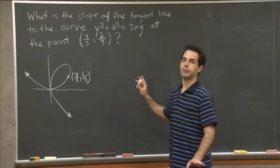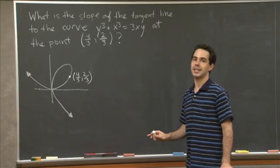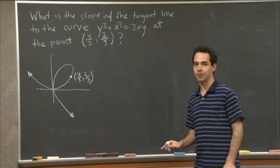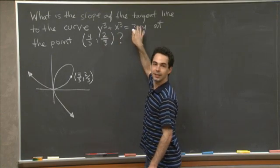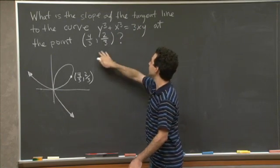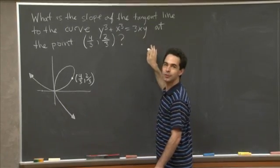So before we start doing anything, let me just make a couple of observations. If you don't believe me that the point 4 thirds, 2 thirds is on this curve, you can always check by plugging the values in and confirm that really, yes, 4 thirds cubed plus 2 thirds cubed is equal to 3 times 2 thirds times 4 thirds.